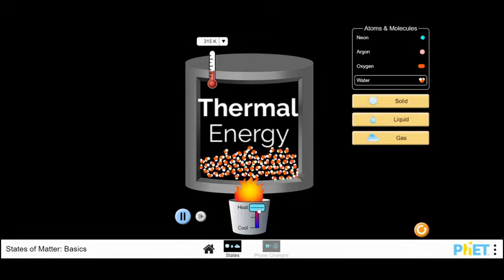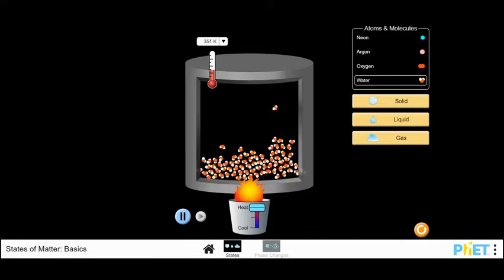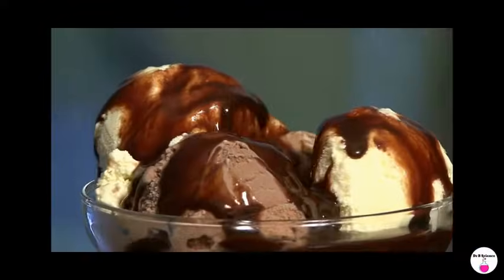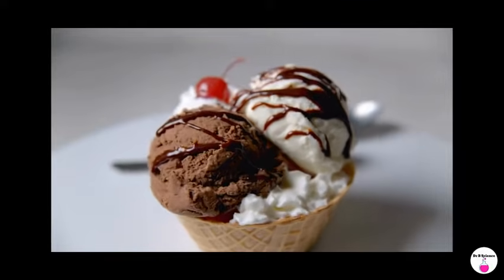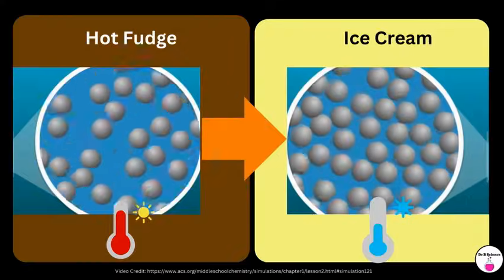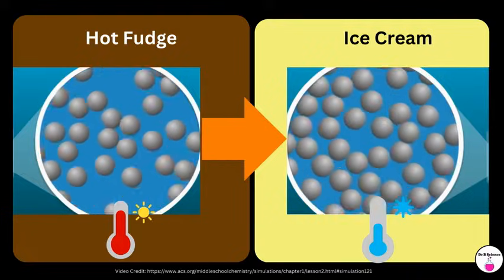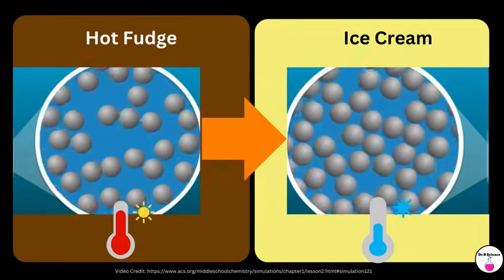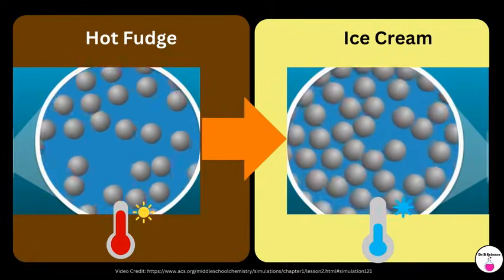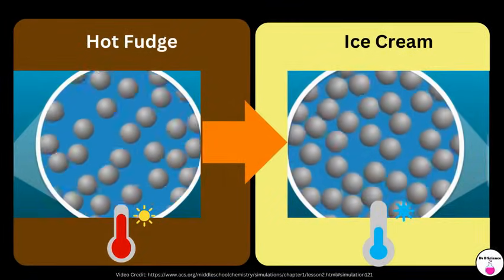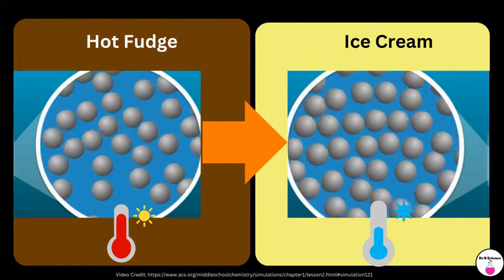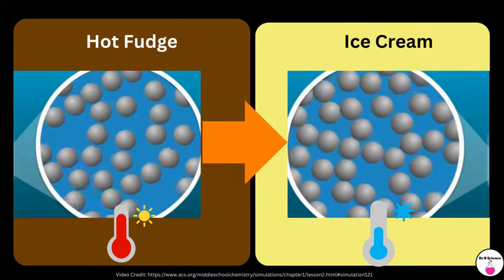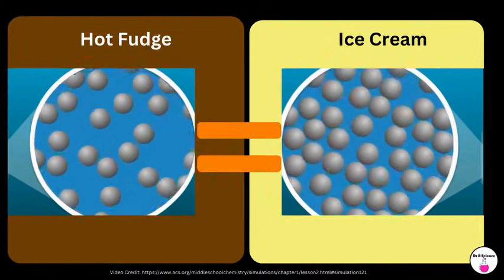Thermal energy. In addition to being transformed, energy can be transferred from one object to another. Take the example of a hot fudge sundae. The hot fudge has particles that are excited and moving fast, having a high thermal energy. In contrast, the ice cream particles are slower, having a lower thermal energy. As the hot fudge touches the ice cream, its heat or thermal energy starts flowing into the ice cream. That's why the hot fudge cools down and the ice cream starts melting. The thermal energy from the fudge is trying to spread out and share its warmth with the ice cream until thermal equilibrium is reached.